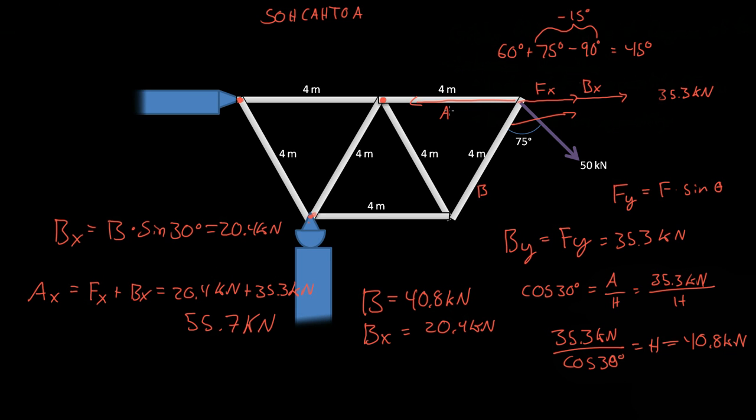So we now know that the total force of A and B are. B is 40 kilonewtons. And since there is no Y component of A, there's no Y component of A, then A is equal to 55.7 kilonewtons. So hopefully this video was helpful. If you have any questions, please leave them in the comments below.